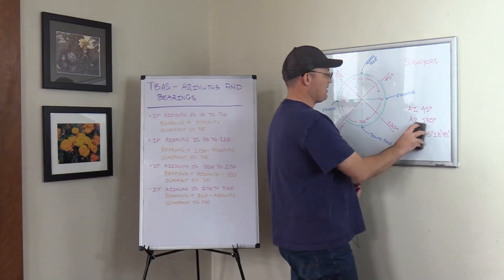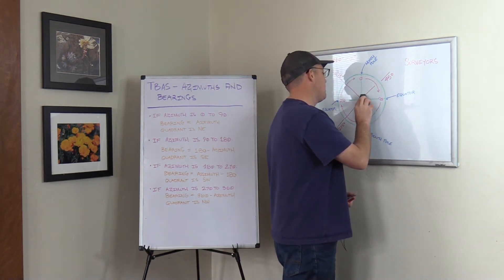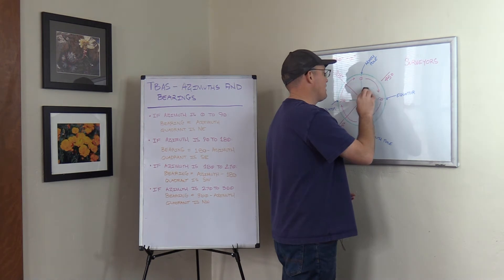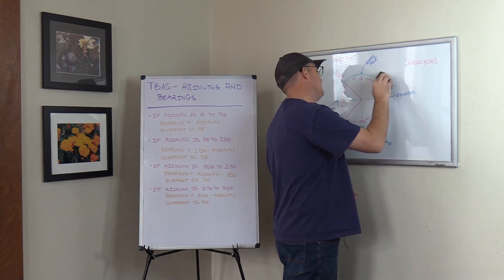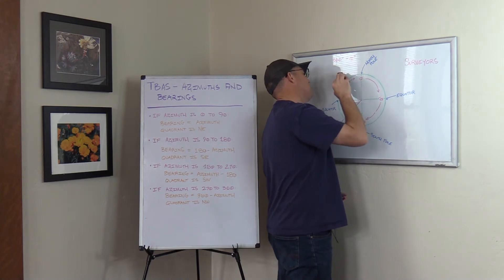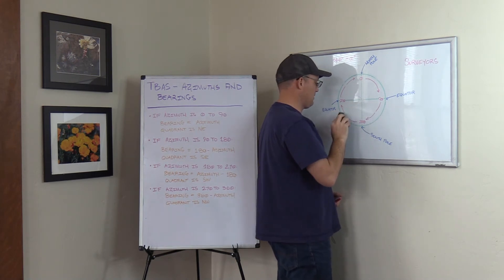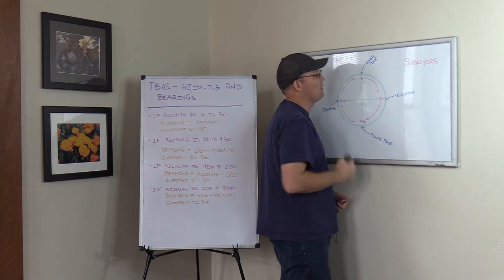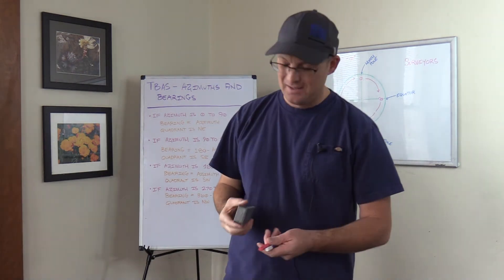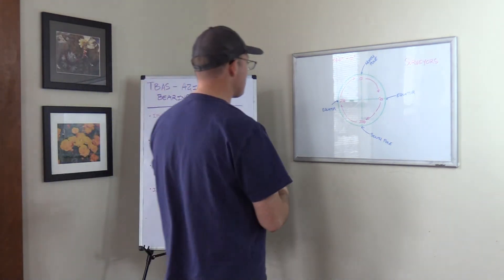Now let's talk about bearings for a little bit. Bearings are a different, just a different way to measure direction. I don't know who invented bearings. They're a pain in the butt. I've been surveying for a long time, so I'm just used to using them. But I think we would have been okay in the world with just azimuths. But somebody came up with bearings and surveyors use them. So we've got to know how they work. Bearings are a little bit different.